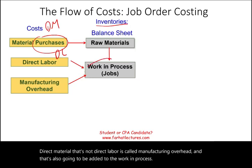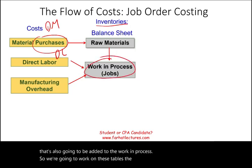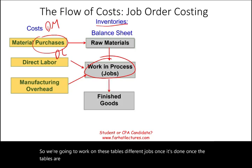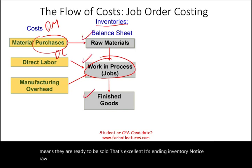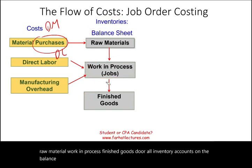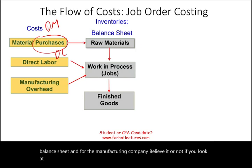We work on these tables across different jobs. Once the tables are completed, we transfer them to finished goods, meaning they are ready to be sold. Raw material, work in process, and finished goods are all inventory accounts on the balance sheet. For a manufacturing company like Ford Motor Company or Tesla, all three accounts are listed separately.